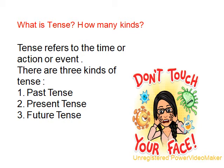There are three kinds of tense. One: past tense. Two: present tense. And three: future tense.